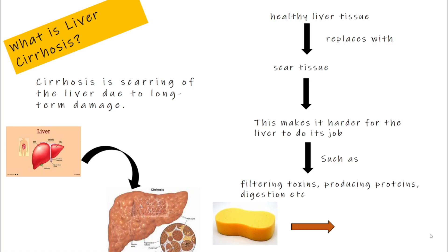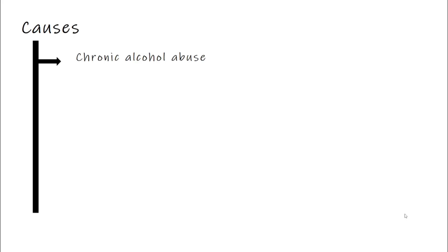You can think of it like this: imagine a soft, healthy sponge, now picture it turning into a hard, stiff stone. That is what happens to the liver in cirrhosis. Now let us talk about what causes liver cirrhosis. One of the most common causes is chronic alcohol abuse — drinking heavily over many years can damage the liver cells.